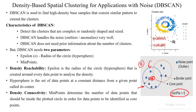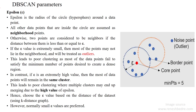Here we have different data points. The data point selected as a center is called the core data point. The epsilon distance provides the radius of the circle around that data point. All other data points inside the circle are assumed to be neighborhood data points.